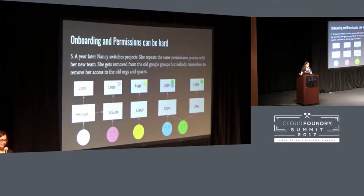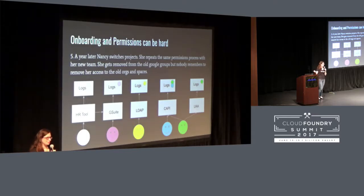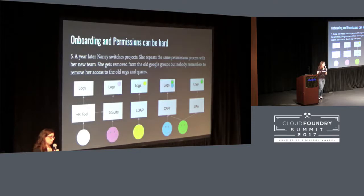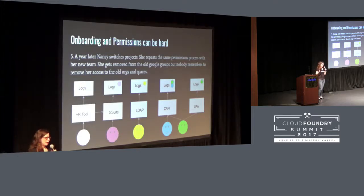A year later, Nancy switches projects. She doesn't want the spam from her old team's Google Groups anymore, so her old PM removes her, and her new PM and team lead go through the same set of actions, adding things in different places. It's very reasonable to think that somebody might forget to remove her access to her old orgs and spaces. So the logs are scattered across different systems, actions are very disparate, and it's hard to track what's going on and make sure the permission structure is propagated through all areas of the system.